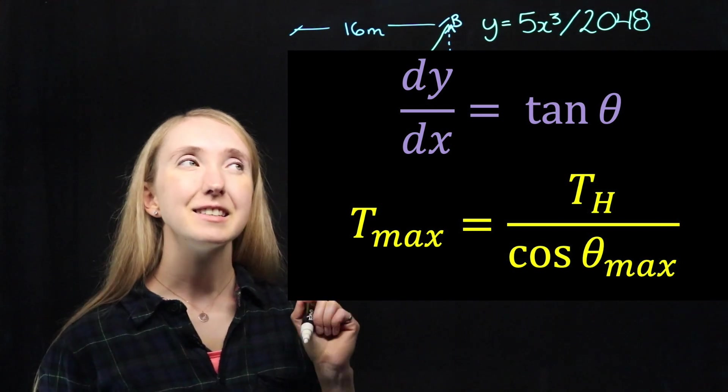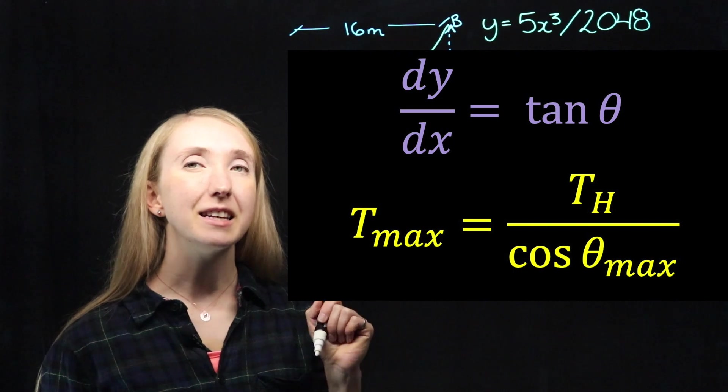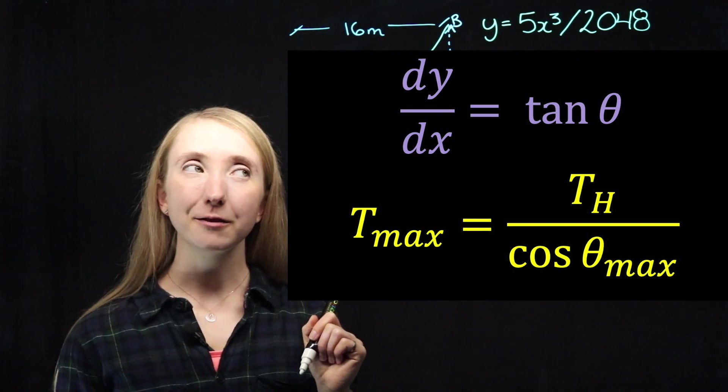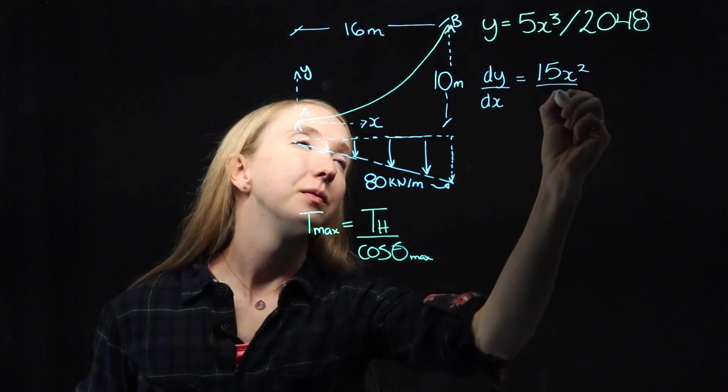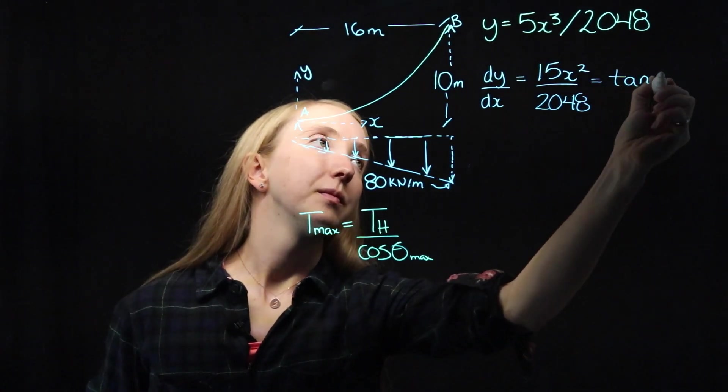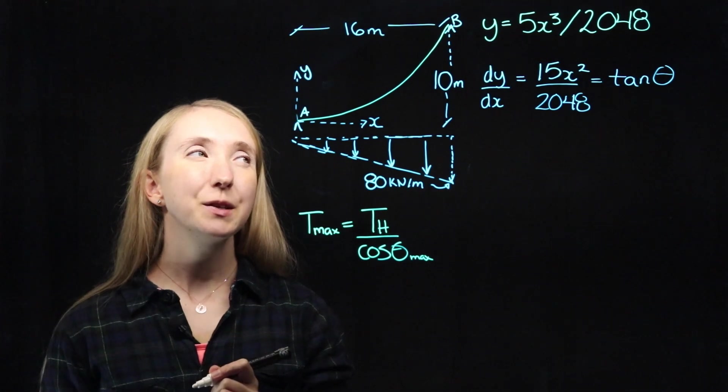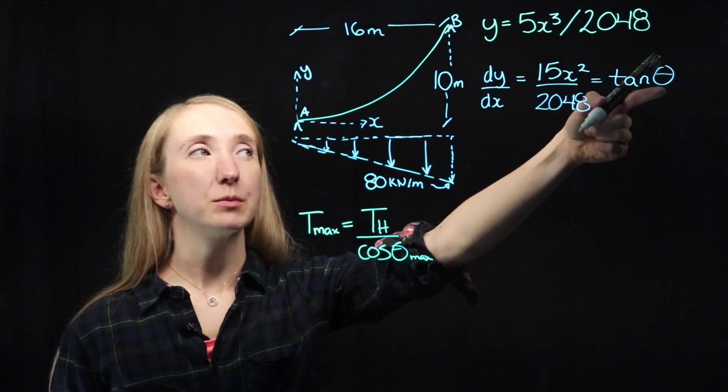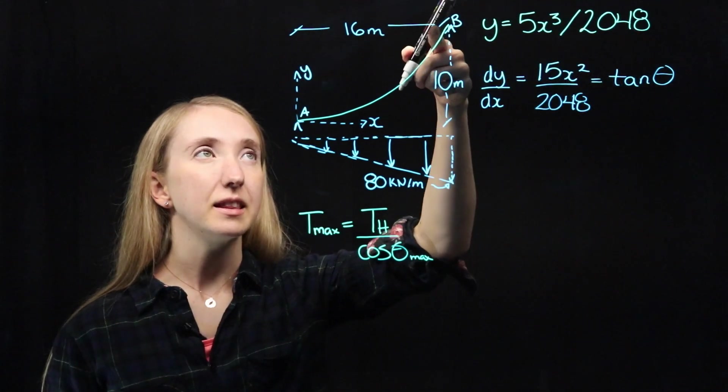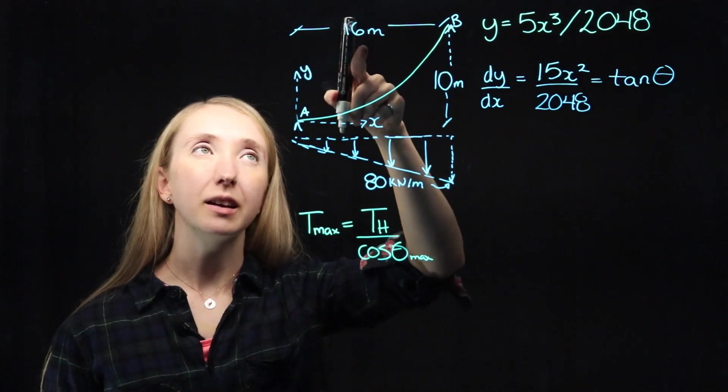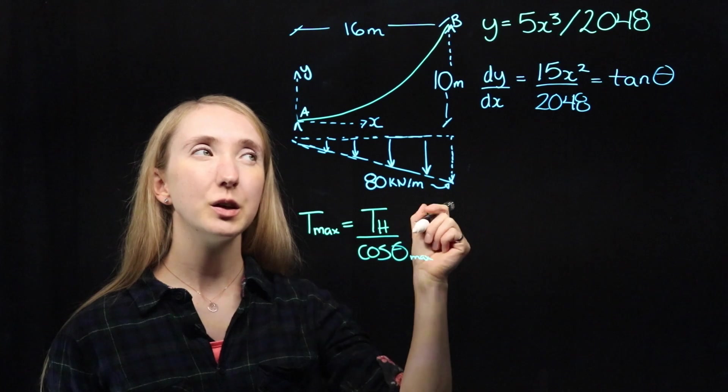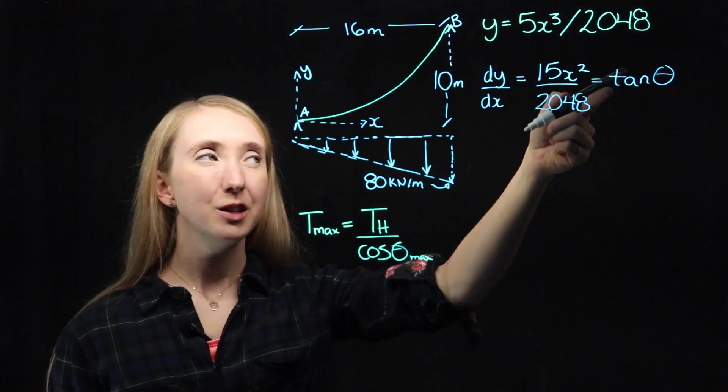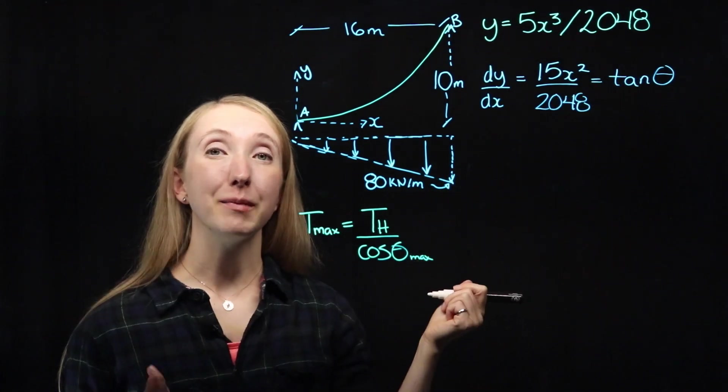And we know that the slope and the angle are related through this relationship. And since dy over dx is just our first derivative, that means x. So where we have our maximum theta is at the end, where we have an x value of 16.